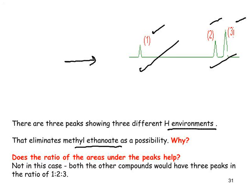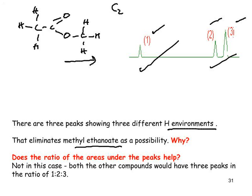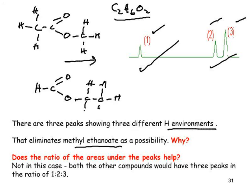Looking at methyl ethanoate versus ethyl methanoate as isomers with the same molecular formula C3H6O2: methyl ethanoate has six hydrogens. Counting the hydrogen environments, it has two types of proton — one methyl group and another methyl group — but due to the lack of symmetry, while both are CH3s they are in different environments, so it produces two peaks. Ethyl methanoate also has six hydrogens, with three types of proton: the methylene protons and the methyl protons, plus the formyl H — three types — producing three peaks. If we didn't know which ester it was, low-resolution NMR would be sufficient to distinguish between them.